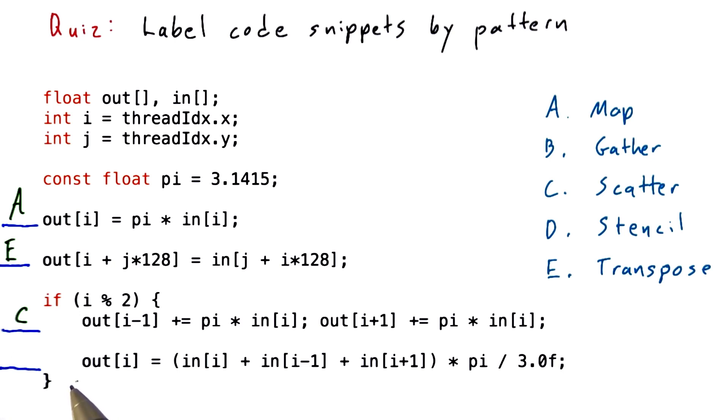And this final line would be a gather. You can see that every thread is writing a single location in the output array, and it's reading from multiple places in the input array, locations that it computes. So this would be a gather.